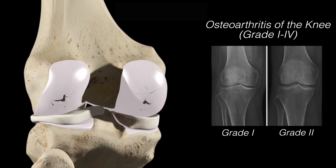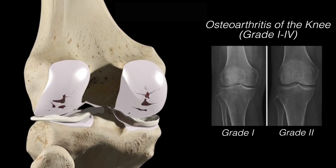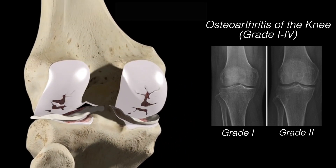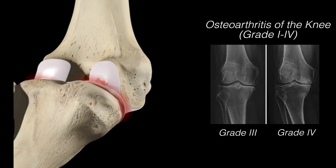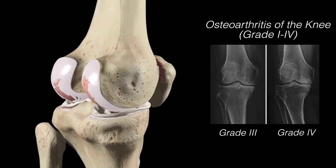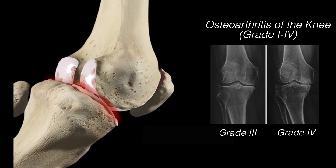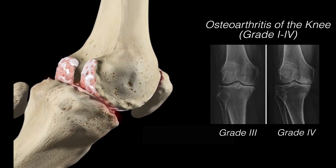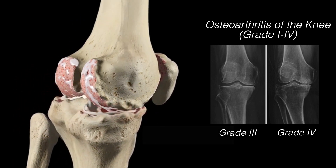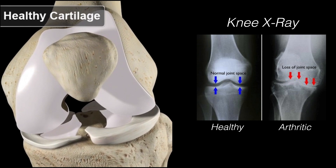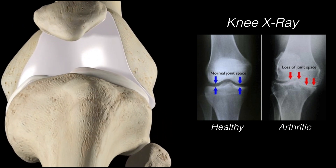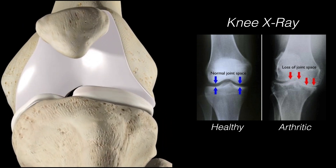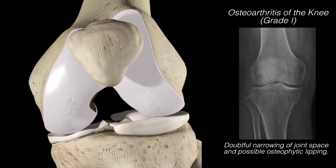Osteoarthritis is among the most common joint disorders and is characterized by joint pain due to wear and tear of the joint. This animation demonstrates the progression of the condition through four stages. Here's a healthy knee with healthy cartilage allowing for smooth motion.